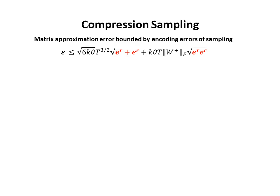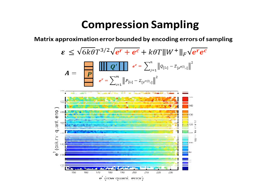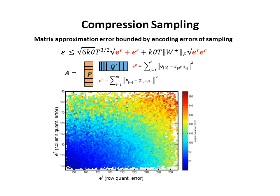In order to solve these problems, we have proposed a new sampling paradigm called compression sampling, based on an interesting underlying connection between matrix low-rank decomposition and lossy data compression. Given a matrix A with low-rank decomposition of the form P and Q', suppose one wants to select some rows and columns to approximate A — we have proven that the selected rows and columns should correspond to the informative code vectors in P and Q'. Here, we have visualized the relation between the low-rank approximation error and the encoding errors of column and row sampling, which have very nice correlations.